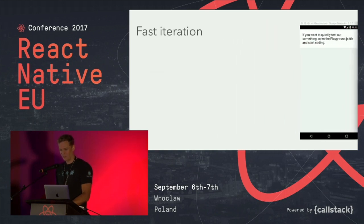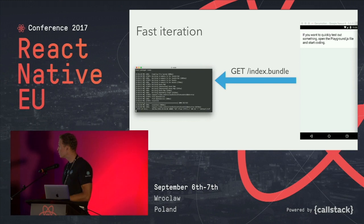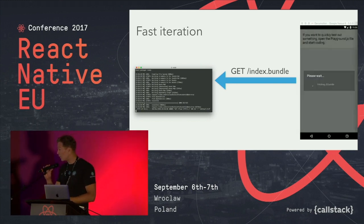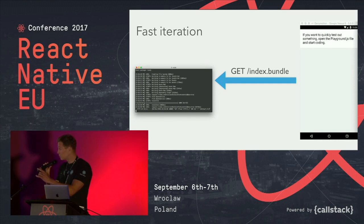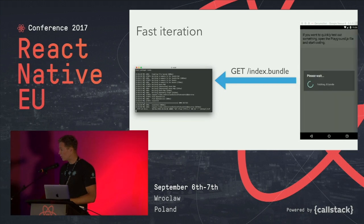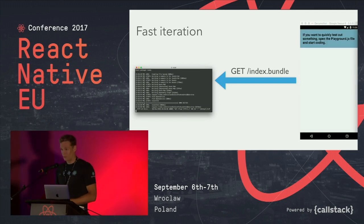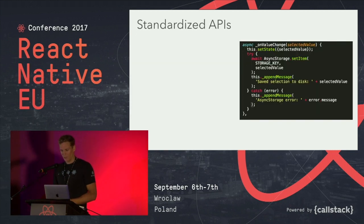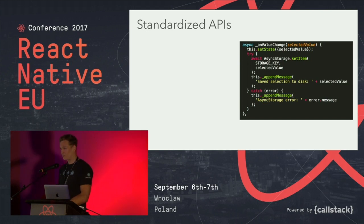Under the hood, if you change one line of JavaScript code, it goes to the React Native packager, rebuilds the whole JavaScript bundle, and the app just restarts and runs again. After a while I also realized that the APIs in JavaScript look the same on both platforms, so I didn't have to learn special APIs for saving something to disk on iOS or Android.